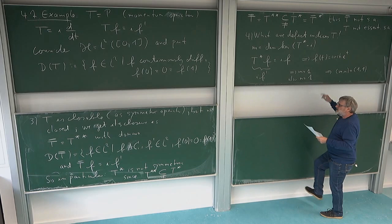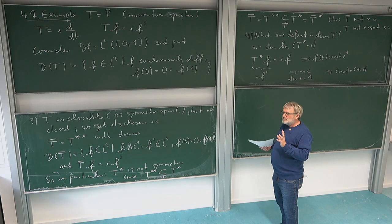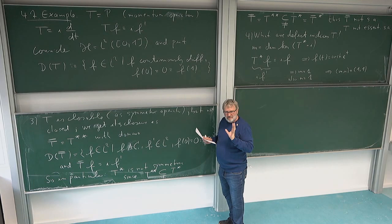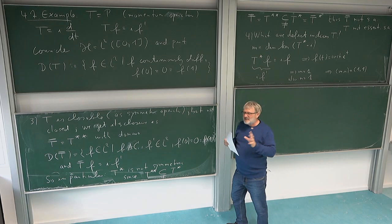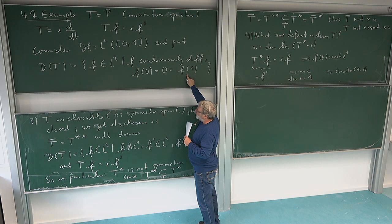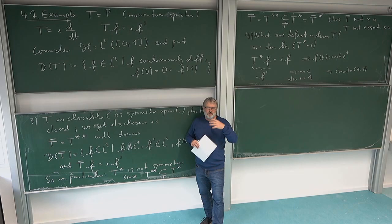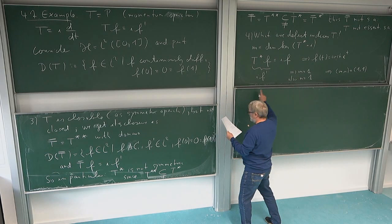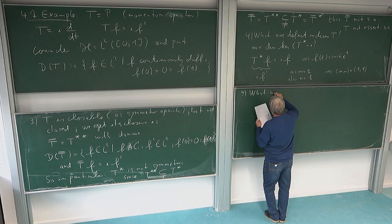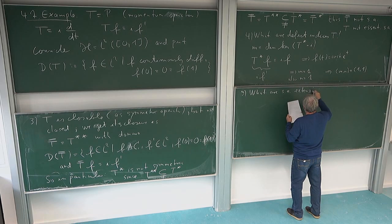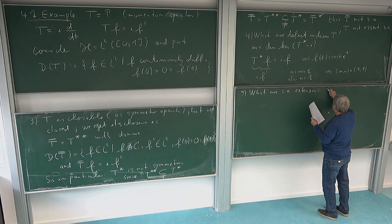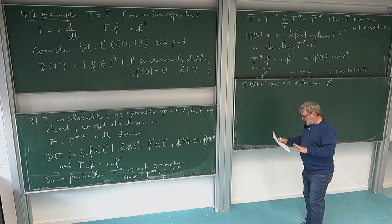The question is: how do we find the self-adjoint extensions? We should make the domain bigger, but not too big. The only thing we can play with are the boundary conditions. Here I have two strong boundary conditions, and if I go to the adjoint, I have no boundary conditions at all. So what I should find are boundary conditions somewhere in the middle, such that the boundary conditions for T imply the same kind of boundary conditions for the adjoint. Let us try to understand this — what are the self-adjoint extensions?